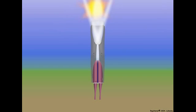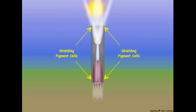In scotopic ommatidia, incoming light is focused on the base of the crystalline cone and conducted to the rhabdom by the crystalline tracts. Unlike photopic ommatidia, scotopic ommatidia are sensitive to changes in light intensity that occur during day and night cycles, and they detect light differently during the light and dark phases of the daily circadian cycle. During the daytime, scotopic ommatidia detect light similarly to photopic ommatidia. The shielding pigments in the secondary pigment cells absorb light rays that enter the corneal lens at an angle, and each ommatidium detects light independently of neighboring ommatidia, just as in photopic ommatidia.